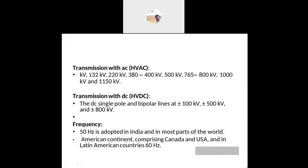Now coming to transmission. For HVAC transmission we have 132 kV, 220 kV, 400 kV, 500 kV, 765 kV, and 1000 kV. These come under HV as well as EHV — extra high voltage for AC transmission.